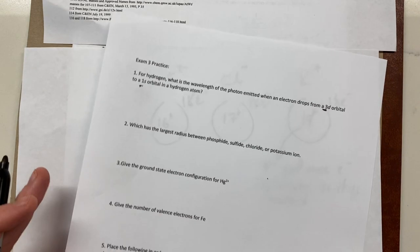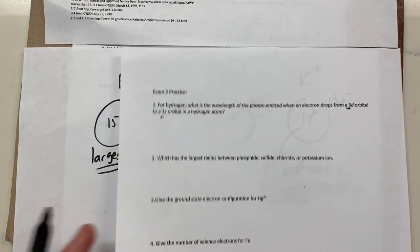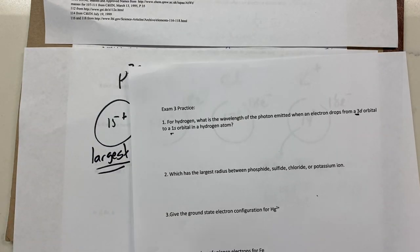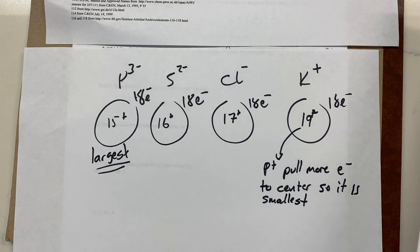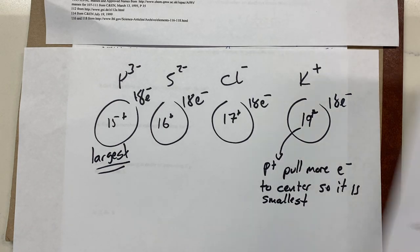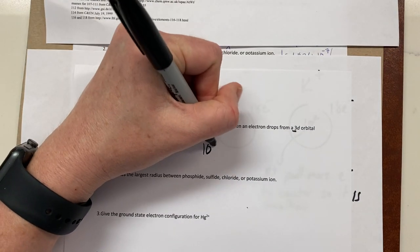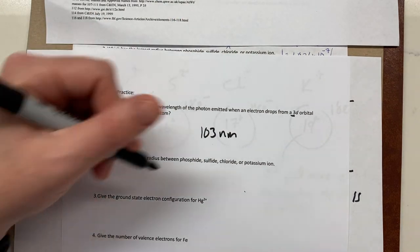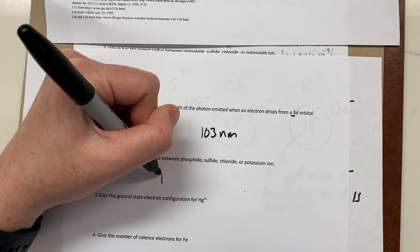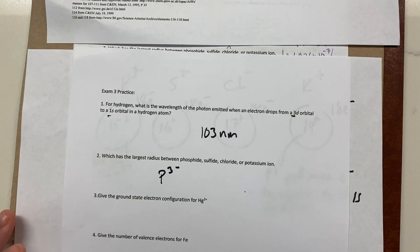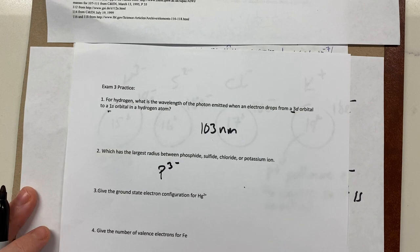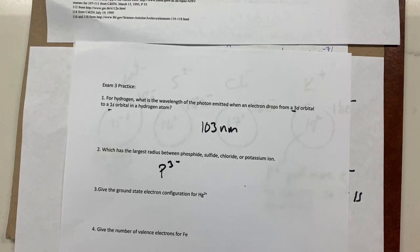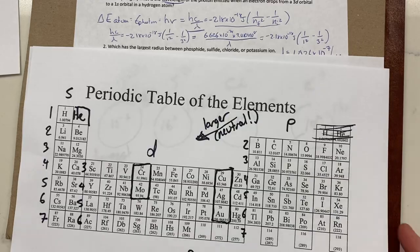The answer to which has the largest radius is the P³⁻ ion — the phosphide ion. Now, question 3: give the ground state electron configuration for the mercury 2-plus ion. Ground state just means standard electron configuration — nothing different or scary.